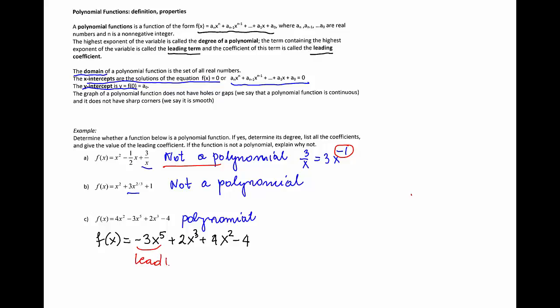The leading term is right here, -3x^5. The leading coefficient is -3, the coefficient of the leading term. The degree is 5, the highest power of the variable.